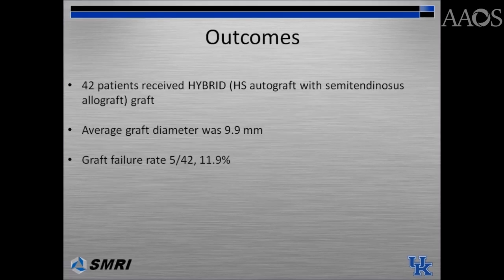With respect to outcomes, 42 patients received this hybrid hamstring autograft with semitendinosus allograft. The average graft diameter was 9.9 mm compared to 7.8 mm in the isolated autograft group. Graft failure rate was only 5 out of 42 patients.